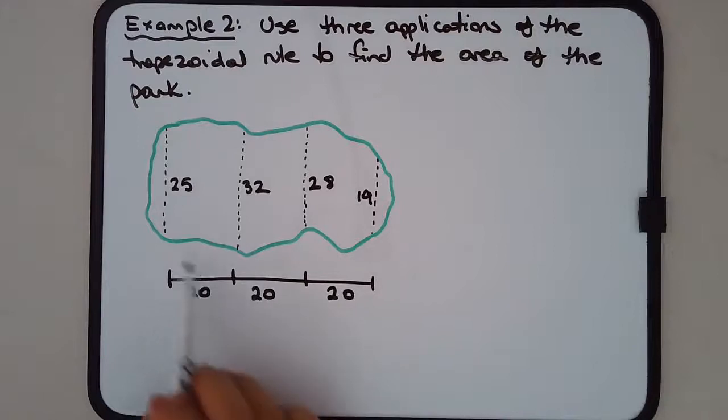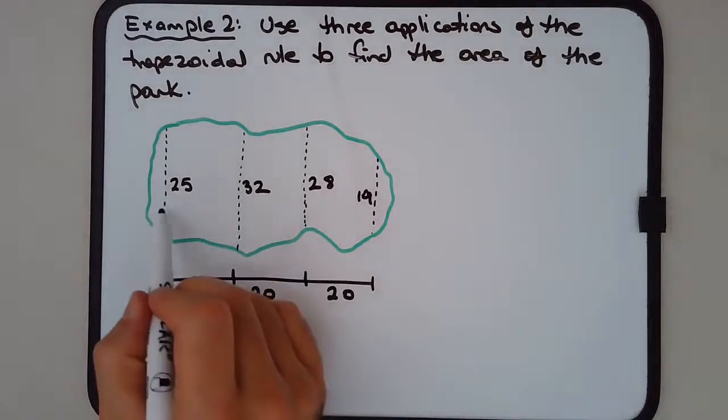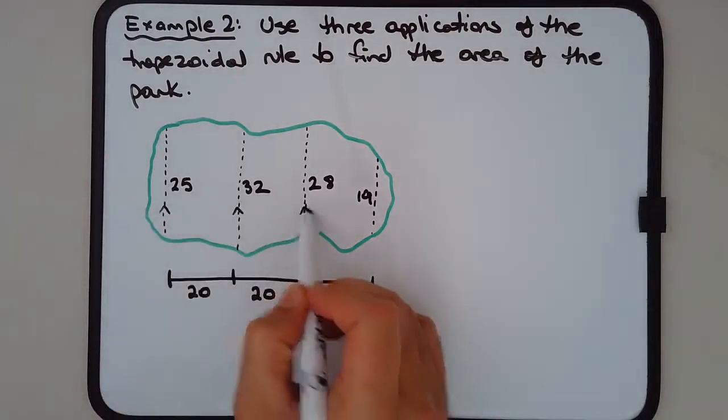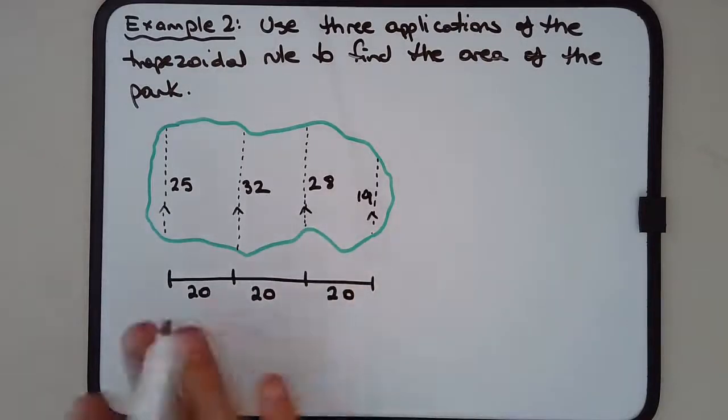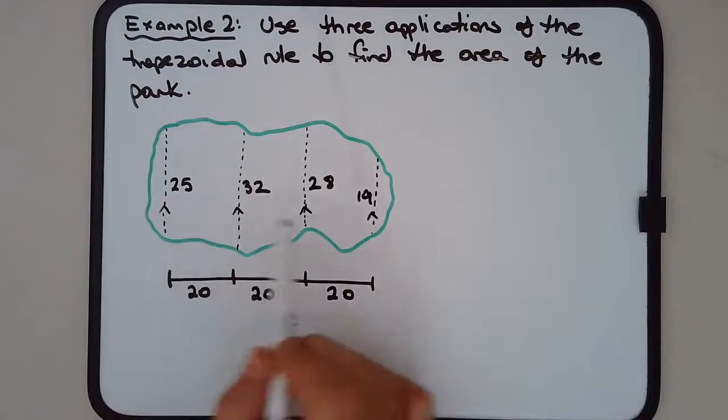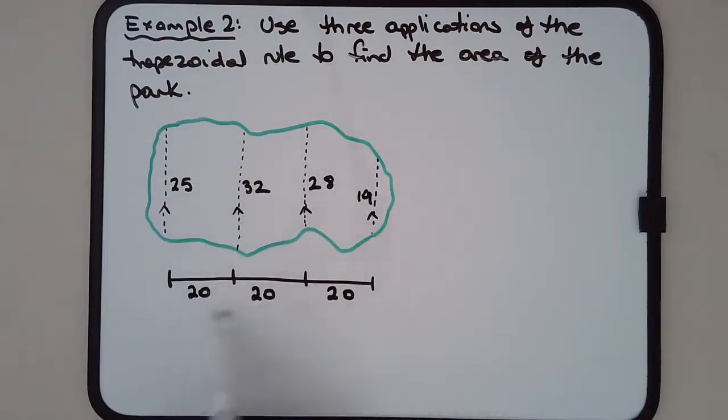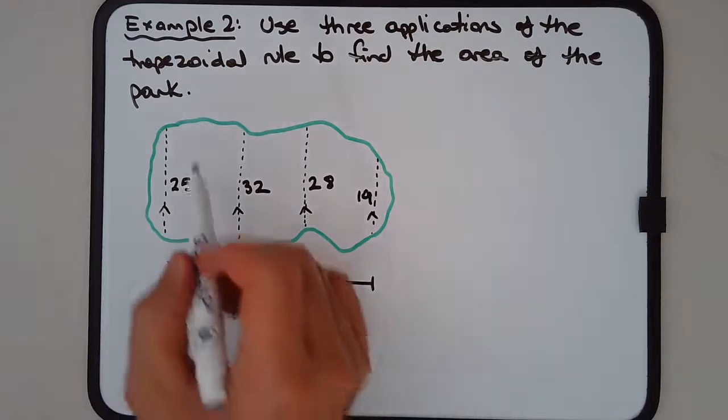Now what we notice is that the dotted lines - these are the parallels - these are all parallel. We don't necessarily show that they're parallel, but we assume they are, and they're also equally spaced. They don't necessarily have to be equally spaced, but I've shown that here on this number line which shows the spacing between the parallel lines.